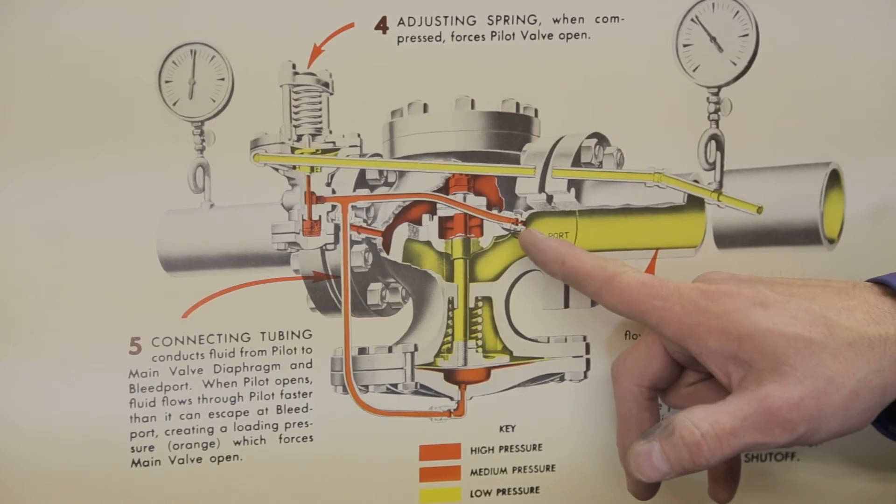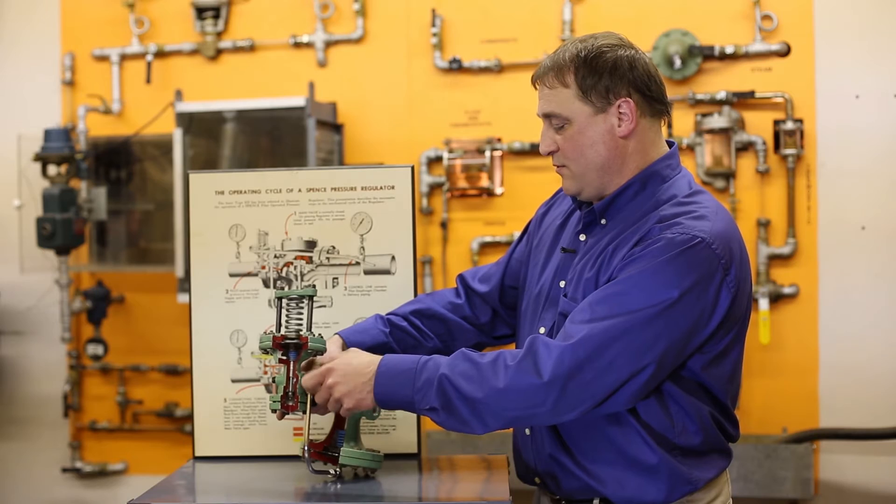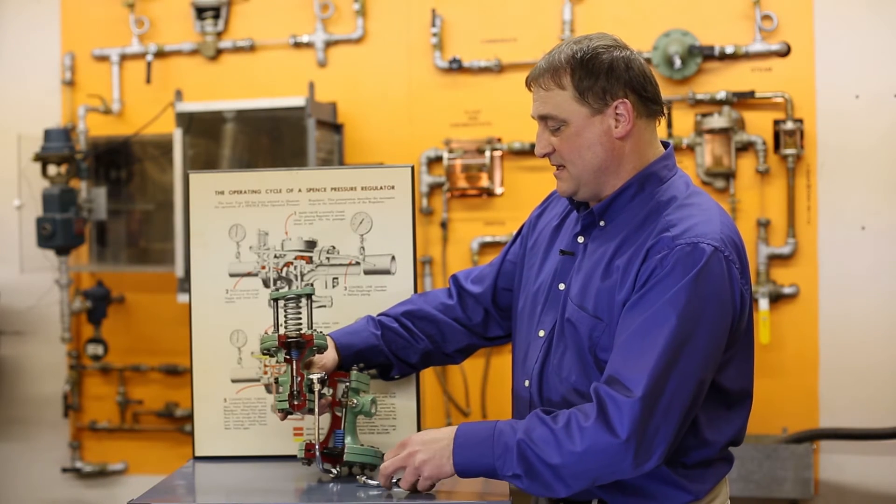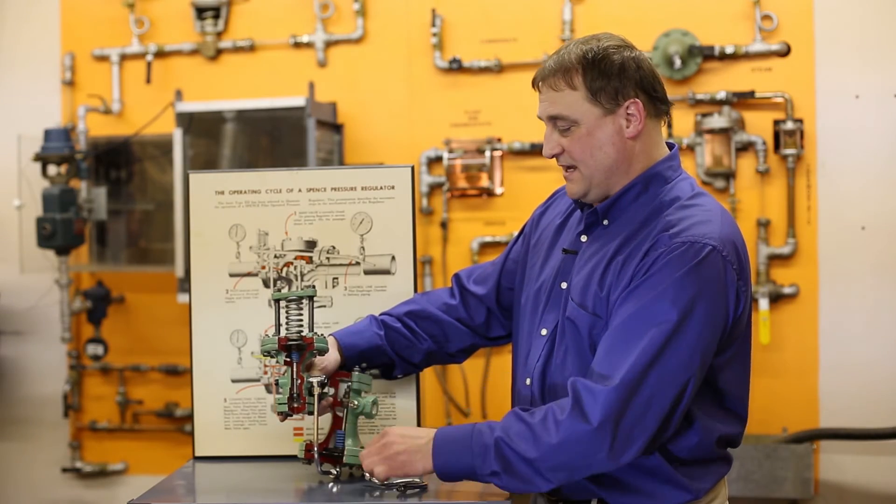You're going to notice here we have what's called a bleed port, and the bleed port is tapped in here. This is how you bleed off that energy so the control pilot can do its balancing act.